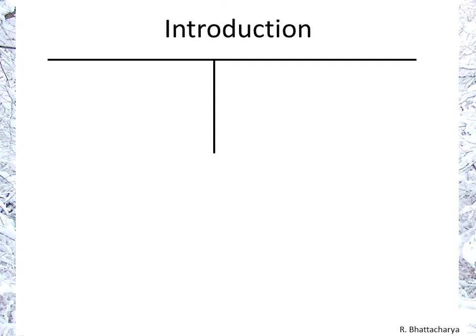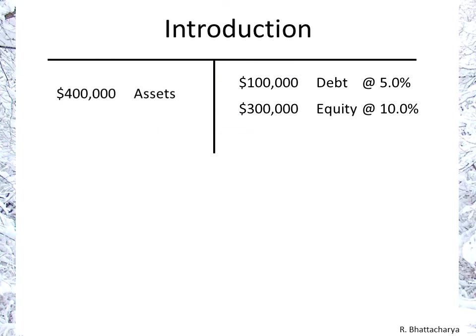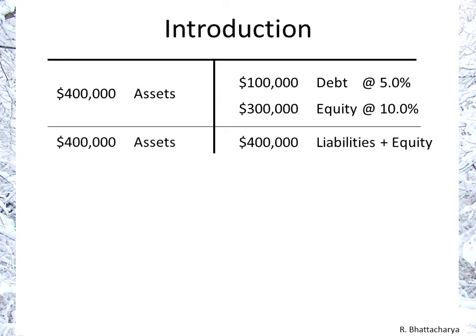Let's say you want to start a business and you need $400,000. You manage to convince some bank to lend you $100,000 at five percent. The rest you can get from equity investors who will invest $300,000 and expect a return of ten percent. That total amount you can now invest in your assets, and your balance sheet simplified is $400,000 in assets and $400,000 in capital — liabilities: debt plus equity.